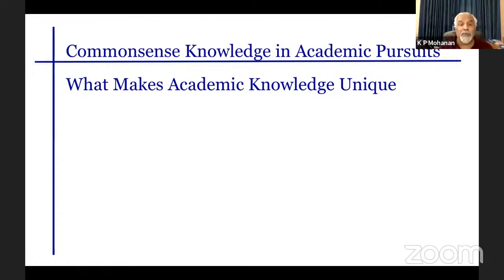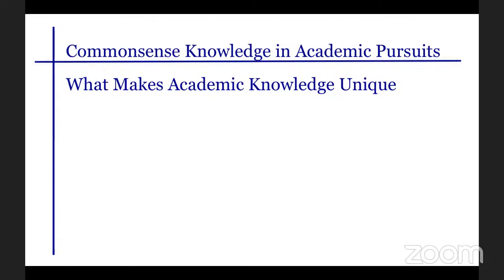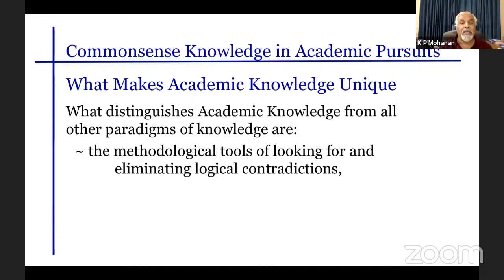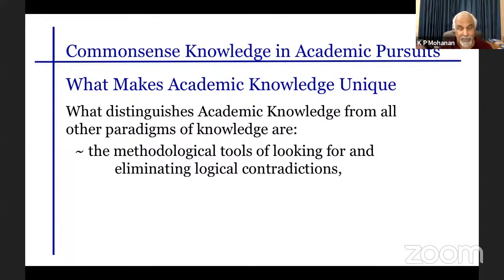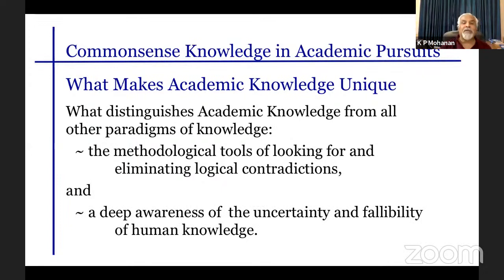What makes academic knowledge unique? Two things: first, the methodological tools for looking for and eliminating logical contradictions — the prohibition of logical contradiction is central. Second, a deep awareness of the uncertainty and fallibility of human knowledge, as opposed to total certainty. These are the two most important parts of academic knowledge that make it unique, different from all other systems of knowledge.